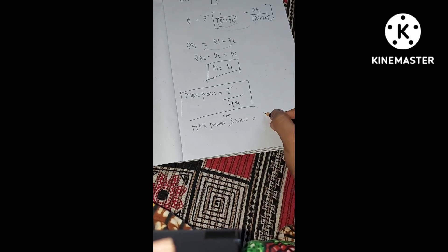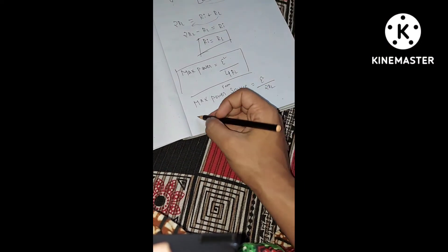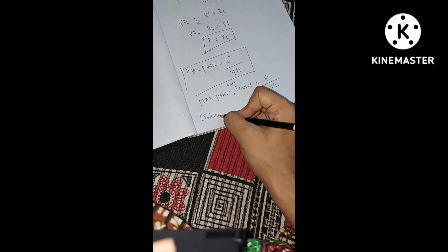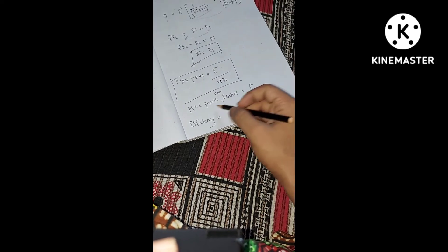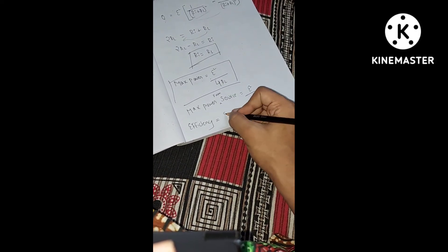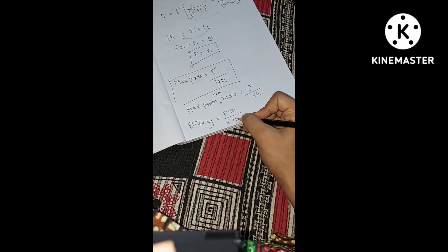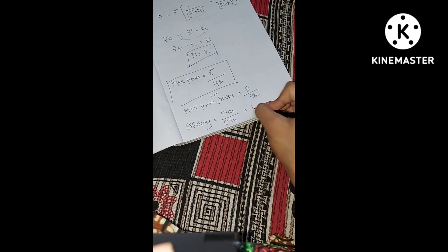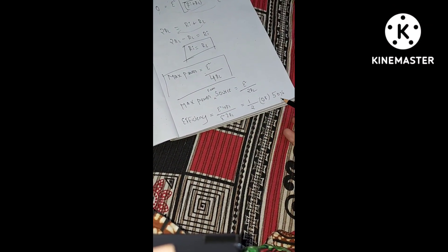Maximum power from the source is E² / (2RL). The efficiency is maximum power divided by maximum power from the source: (E² / 4RL) / (E² / 2RL) = 1/2, or 50%. Hence the efficiency is 50%.